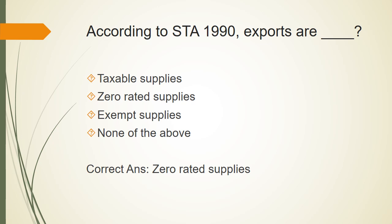According to Sales Tax Act 1990, exports are zero-rated supplies. 'Supplies' means sales — the things we sell. Zero-rated means there is a tax, but its rate is zero. 'Exempt' is different — exempt means there is no tax at all. Zero-rated means tax exists but the rate is zero.